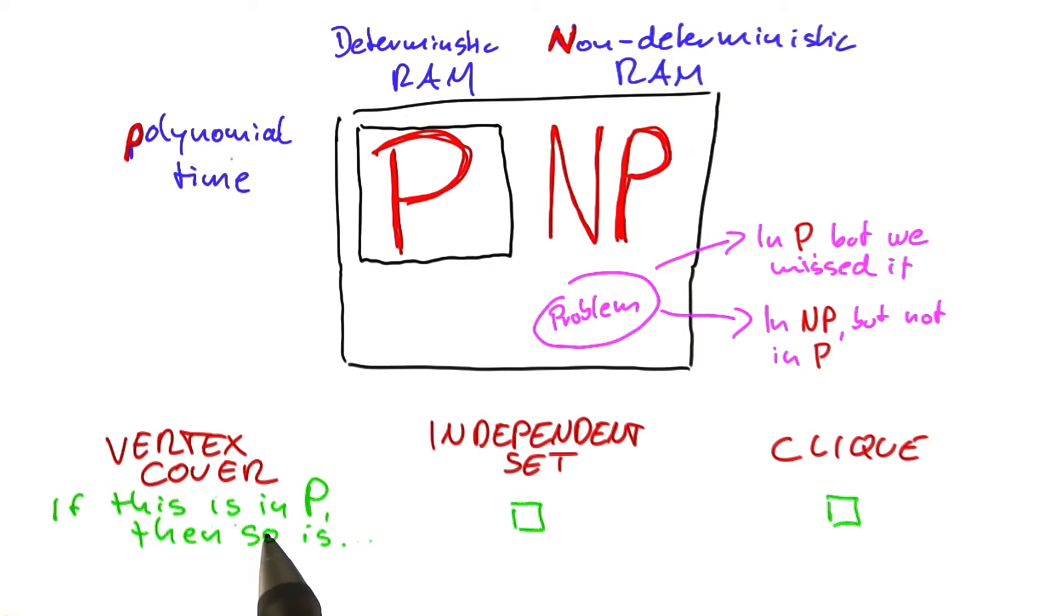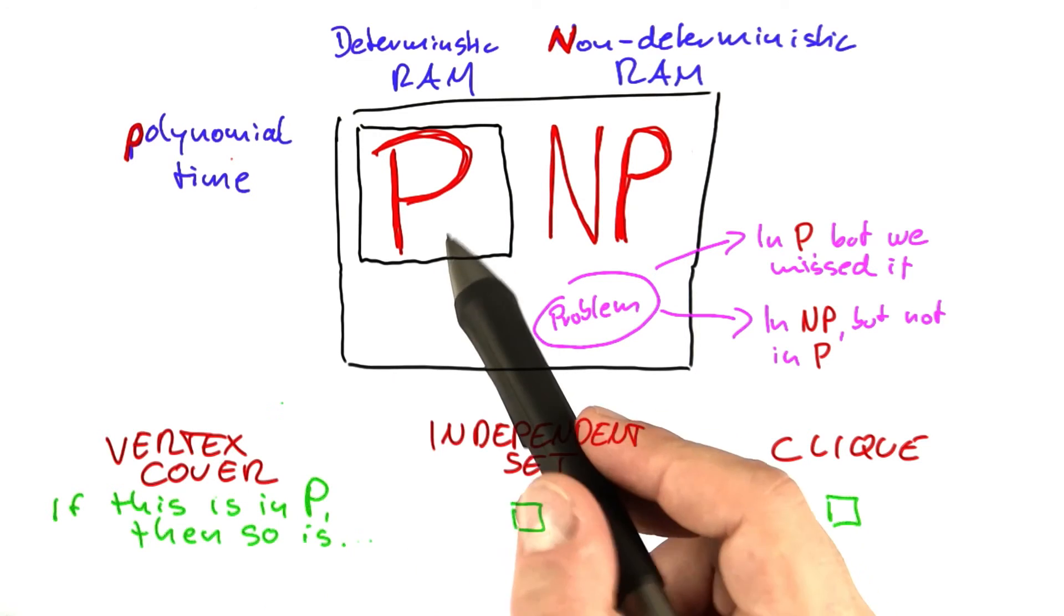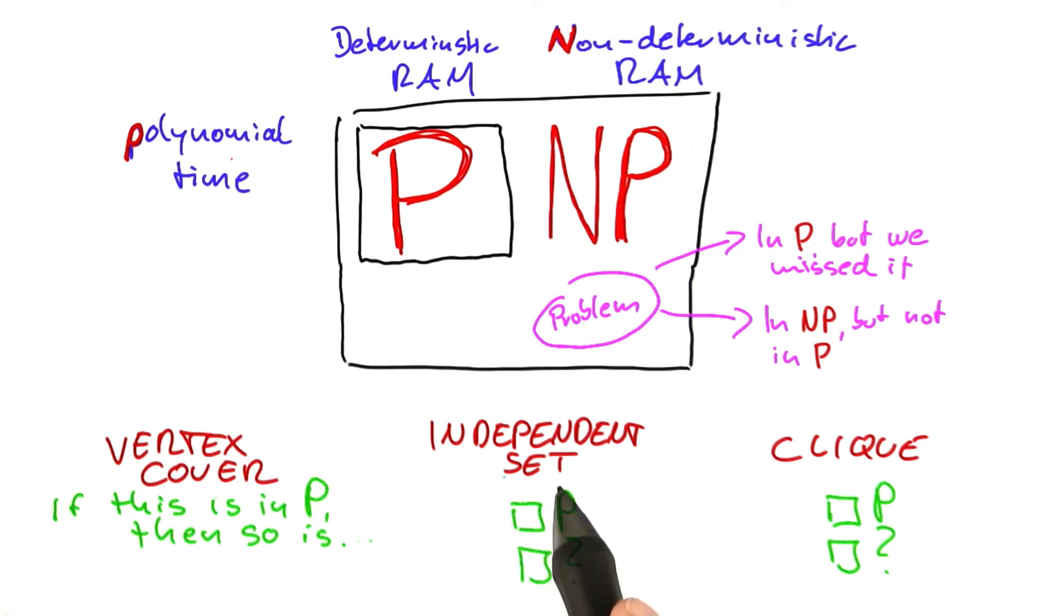So let's assume we found a polynomial time algorithm for vertex cover. In that case, we would know for sure that vertex cover is contained in P. So what would be the case for independent set and clique? Would we also know those problems to be in P, or would it not be possible to make such a statement?